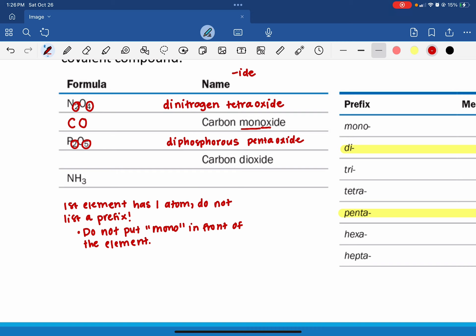For the fourth one, again, when there's nothing in front of the first element, it's assumed to be mono or one. So carbon. There is di in front of oxide. And ox implies that we are working with the element oxygen. We're just going to go ahead and put a two behind there. And that's it.